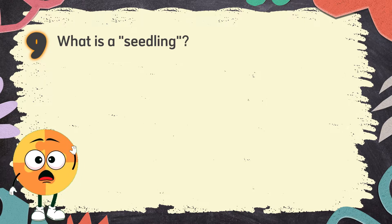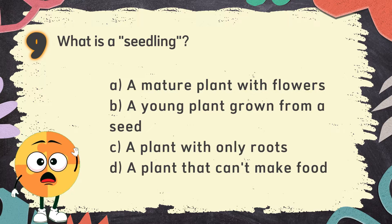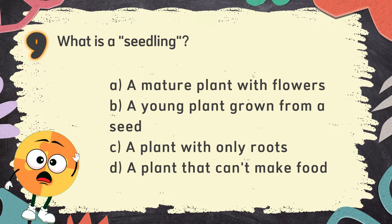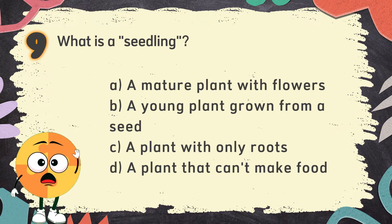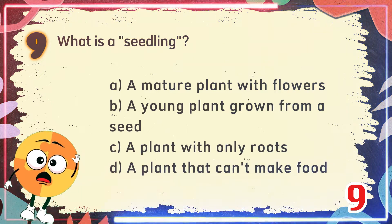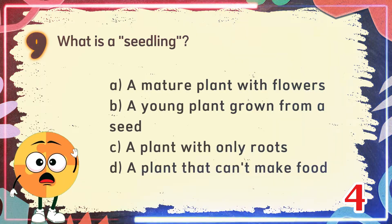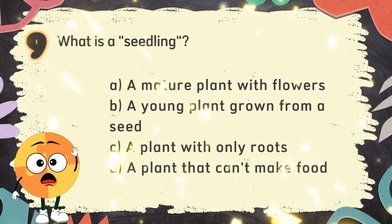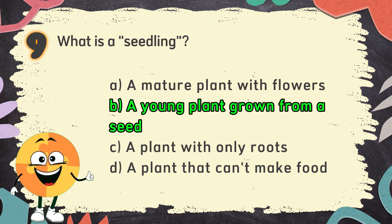Number 9: What is a seedling? The choices are: A. A mature plant with flowers, B. A young plant grown from a seed, C. A plant with only roots, D. A plant that can't make food. The correct answer is B. A young plant grown from a seed.